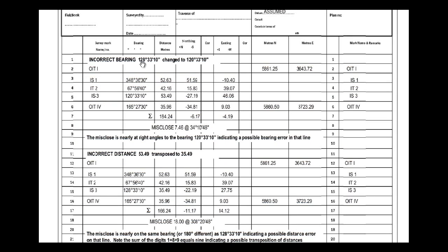On this traverse sheet, I changed the bearing 128°33'10" to 120°33'10" — a common error where we mistake an 8 for a 0. I've put the wrong bearing in there and we can see that we get a misclose of 6 meters and 4.19. Using techniques shown in other videos, we are able to determine that the misclose is 7.46 meters on a bearing of 34°10'48".